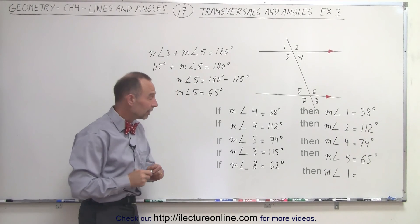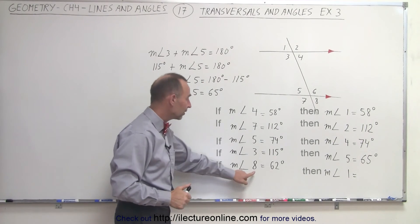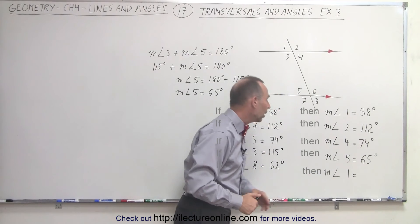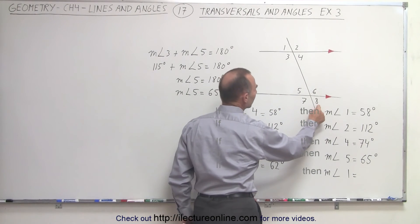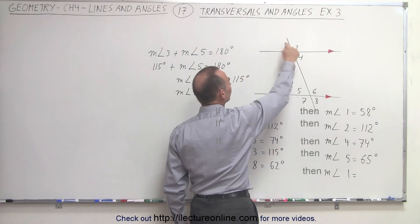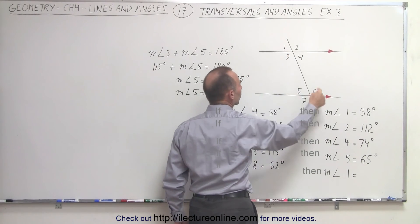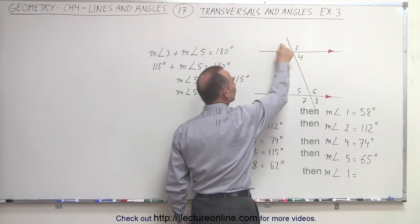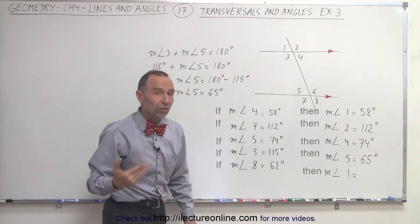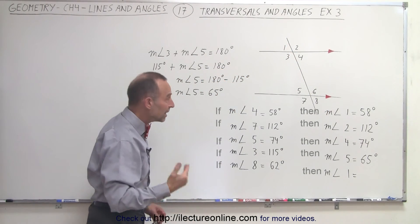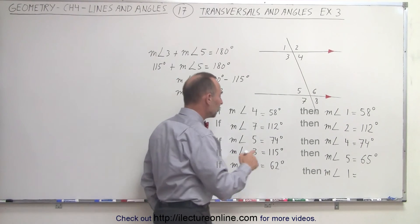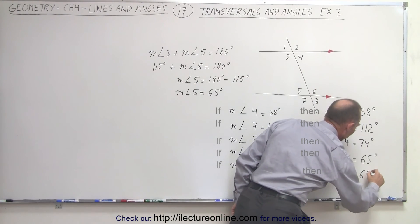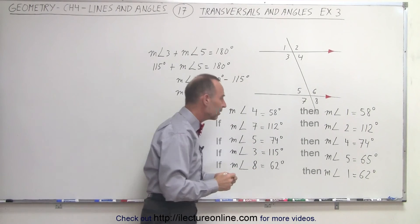Finally, if they tell us that the measure of angle eight is 62 degrees, what is the measure of angle one? Angle eight is over here and angle one is over here. We know that these are what we call alternate exterior angles, and alternate exterior angles must be equal. Therefore, the measure of angle one is also 62 degrees.